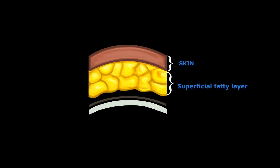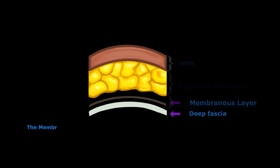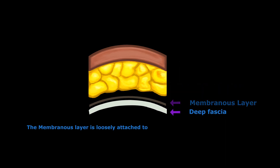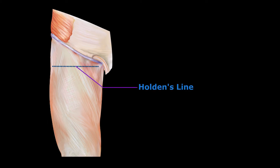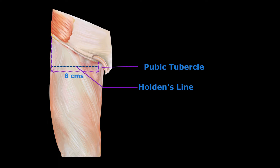The superficial layer of the superficial fascia is a fatty layer, and the deep layer is the membranous layer. The membranous layer is loosely attached to the deep fascia of the thigh, except near the inguinal ligament, where it firmly attaches along a horizontal line called Holden's line. This Holden's line is an imaginary line that begins a little lateral to the pubic tubercle and extends laterally for about eight centimeters.